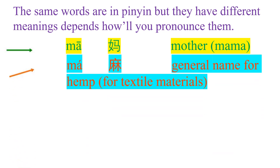The next one is a rising tone. Again, the word MA, but the tone is rising, so we read this as MA. This is the simplified Chinese character for MA. The meaning of this is the general name for hemp — a plant — and also referring to textile materials. So we read this as MA.